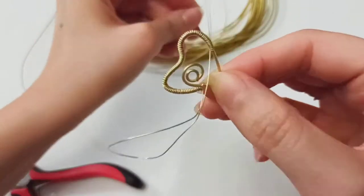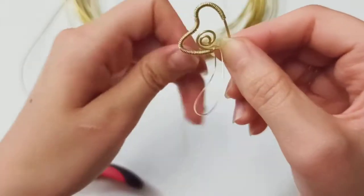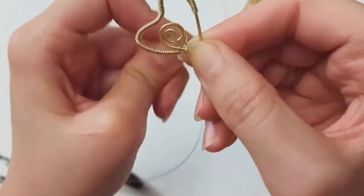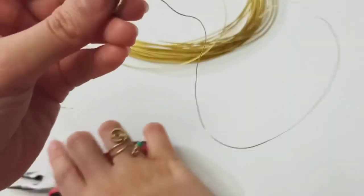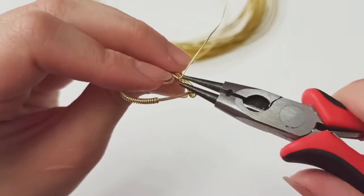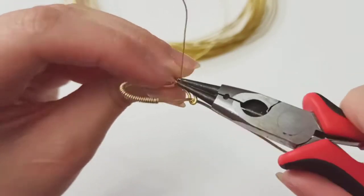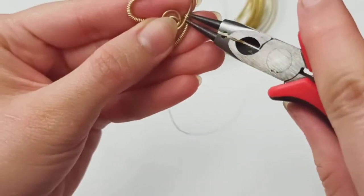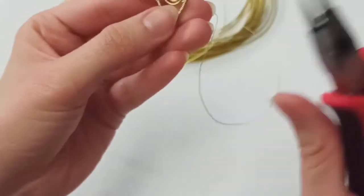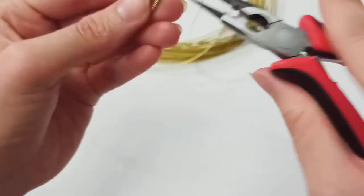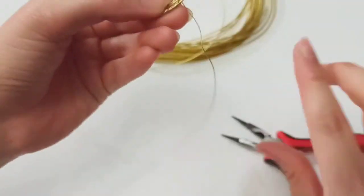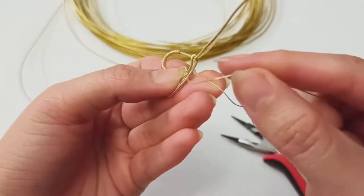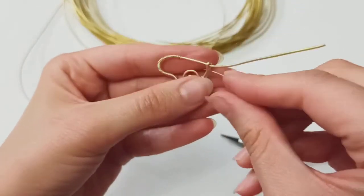You could use your round nose pliers to do that better, and then push it. Now insert the wire between these two and make a loop in between.